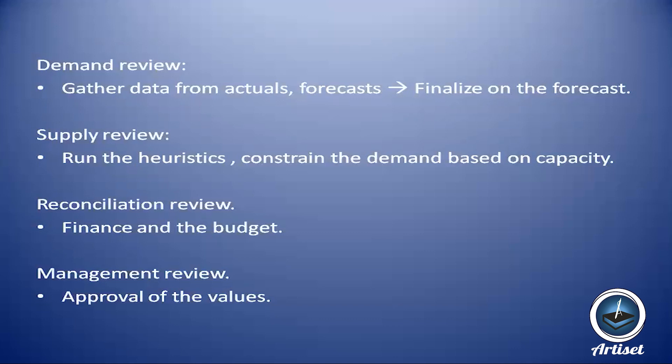In the supply review, supply runs heuristics and constrains demand based on capacity. If demand planners agree on 500 units, supply review calculates what quantities are in stock, how much needs to be manufactured, and what needs to be purchased. There are two possibilities: supply can either meet the demand (ideal case), or it determines it can only provide 300 because there aren't enough machines or labor.